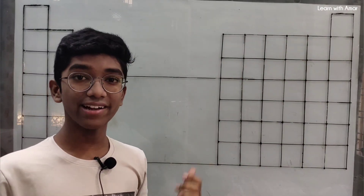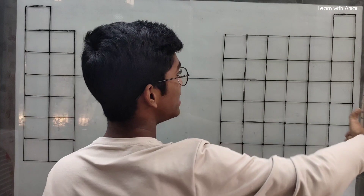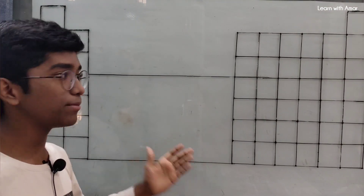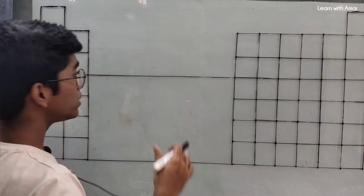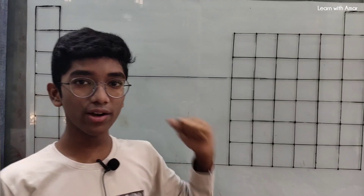The modern periodic table contains groups and periods. The vertical columns are known as groups and the horizontal rows are known as periods. There are 18 groups and 7 periods in the modern periodic table. In this video we are going to look at how to easily remember with tricks the elements in each group in S block and P block.